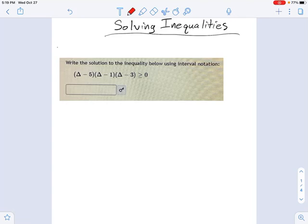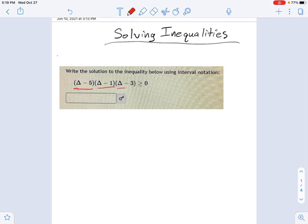In this example, we're asked to find the solution to a cubic inequality. I've got three factors here: x minus 5, x minus 1, and x minus 3. Taken together, this makes a cubic function, which is factored for us, thankfully.